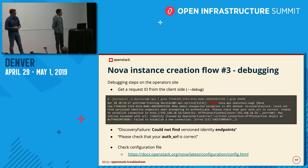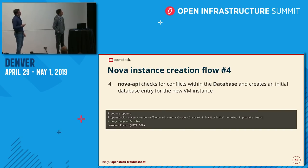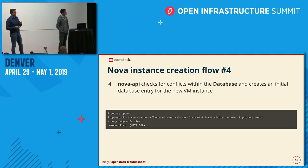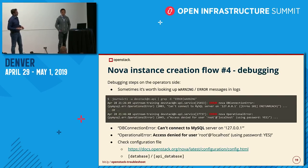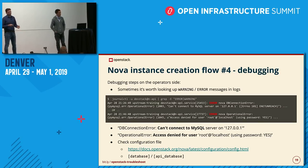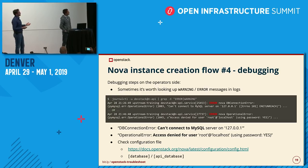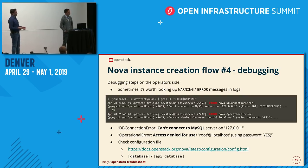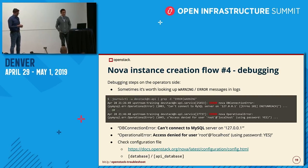Nova instance creation step 4: the API checks for conflicts within the database. After resolving the Nova-to-Keystone problem, it might be the case that Nova can't connect to the database either. Most probably there is some connectivity error or a database user/password error. Searching for error or warning messages, you can see a DB connection error — could not connect to MySQL on the given server — and it even tells you that access was denied, most probably because the username or password was wrong. Check the database section in Nova's configuration file.